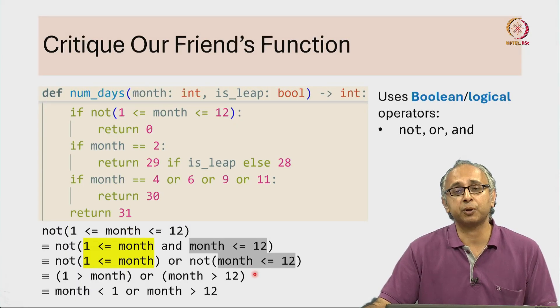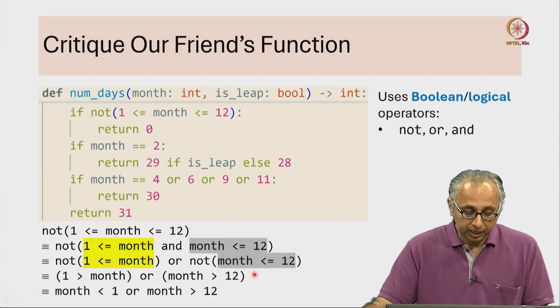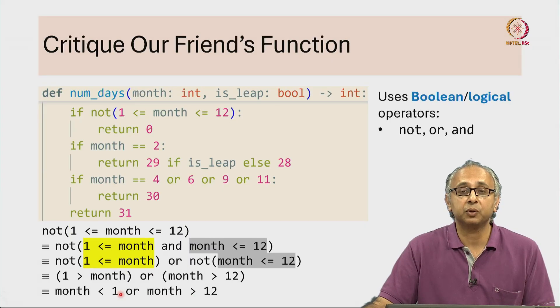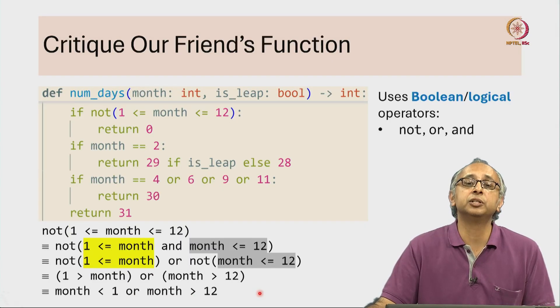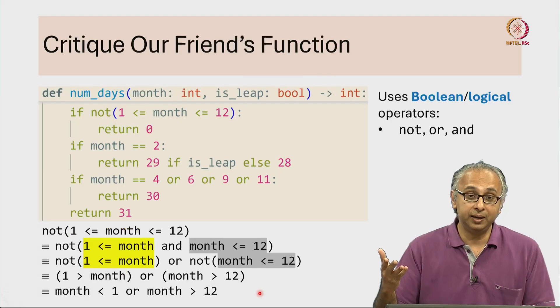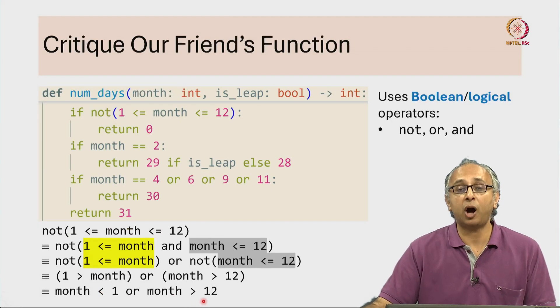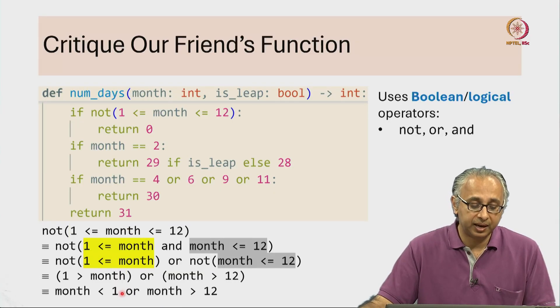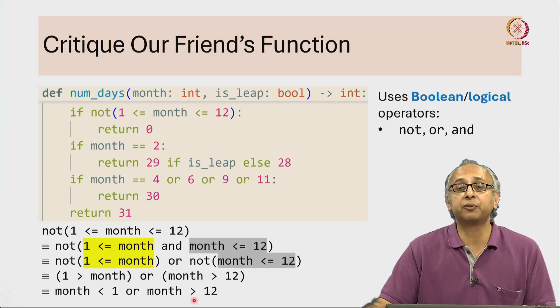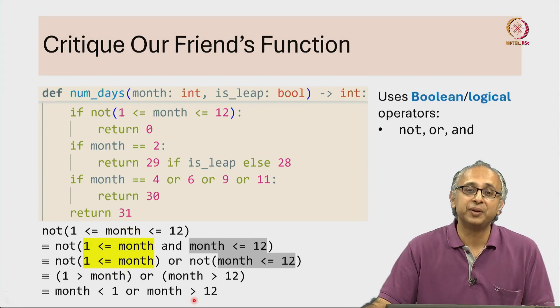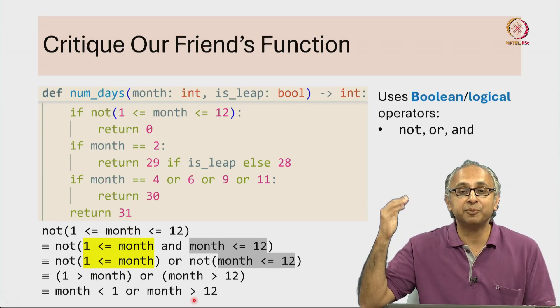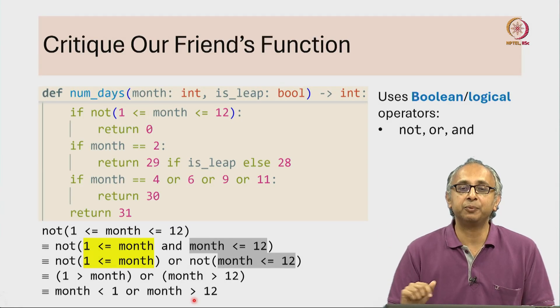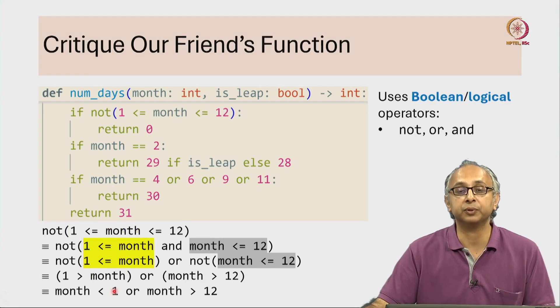For easy readability, I would encourage you to actually put brackets even here, although it turns out they are not strictly necessary. Why? Well, this expression has multiple operators. It has logical operators, in particular the or, and it has relational operators, the greater than and the less than. And it turns out the relational operators have higher precedence than logical or boolean operators. But for readability, I would encourage you to actually put brackets around this.